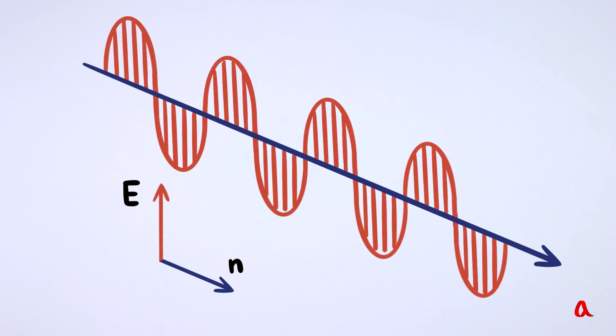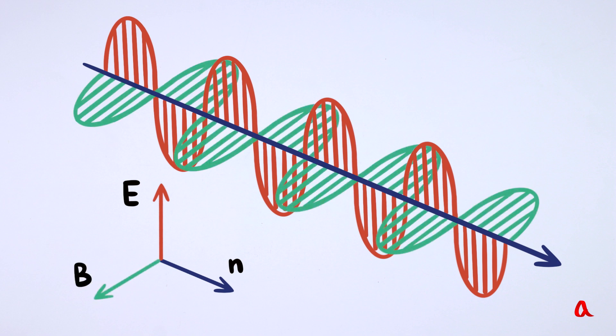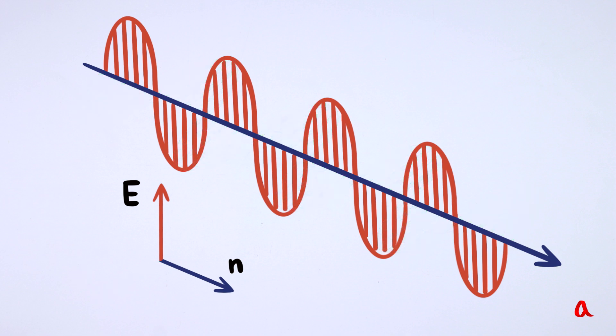To explain this we will start with the fact that light is a transversely polarized electromagnetic wave. The vectors of the electric field E and the magnetic field B are perpendicular to the direction of wave propagation. We will associate the direction of wave polarization with the direction of the electric field vector.